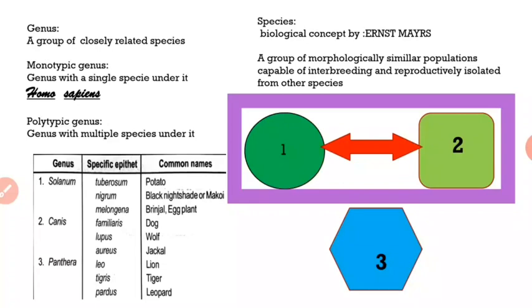Though we know that the genus Homo also had species like Homo erectus, Homo neanderthalensis, and many others, today we have a single species under the genus Homo, which is sapiens. So a monotypic genus is one which has only a single living species under it.